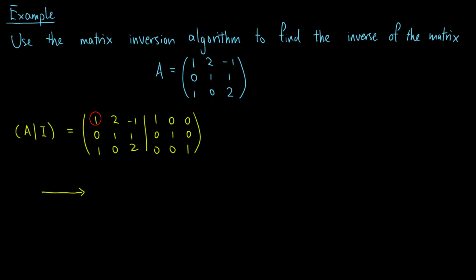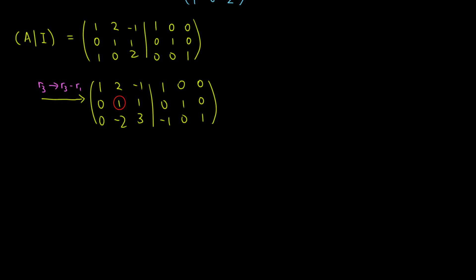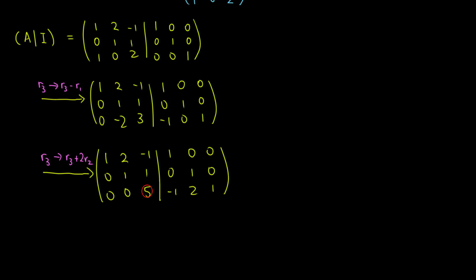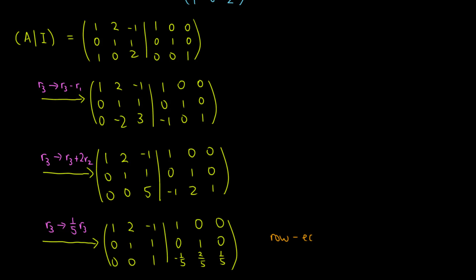Since the top left entry of A is 1 and the entry below it is 0, the first step is to make the first entry in the third row to 0, which means we subtract the first row from the third row. Then the leading entry in the second row is 1, so we make the entry below it to 0 by adding 2 times the second row to the third row. Now the leading entry in the third row is 5, so we multiply the third row by 1/5. We obtain the following augmented matrix, and A is already in row echelon form.